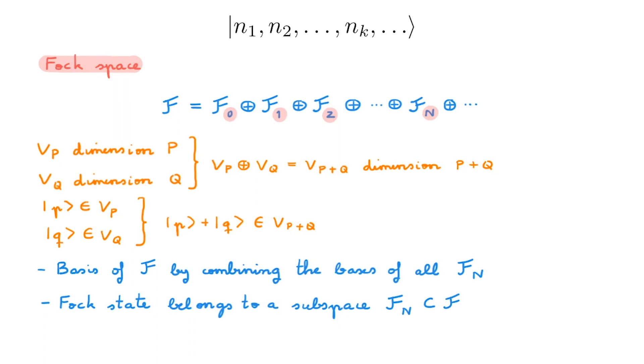As we will see in many other videos, a very important Fock state is the so-called vacuum state which corresponds to zero particles. We denote it by a bracket with a label zero and it is the state belonging to the one-dimensional state space F0.